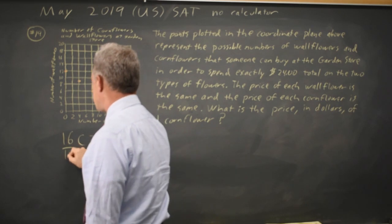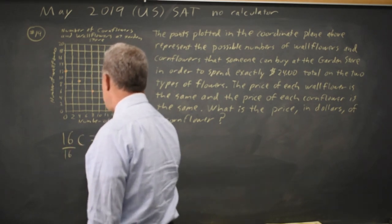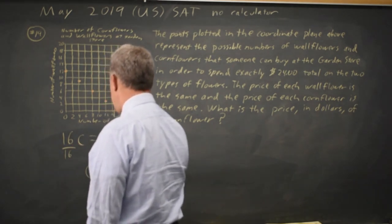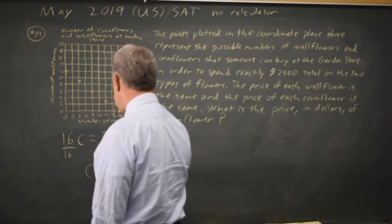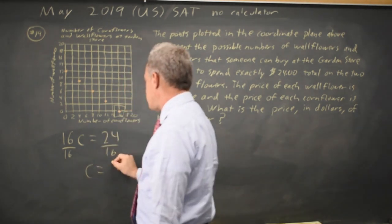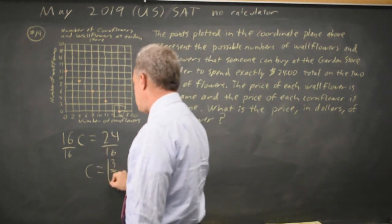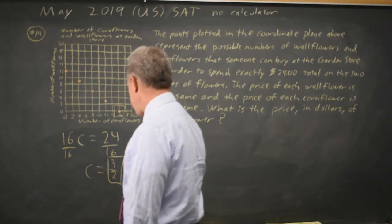Divide both sides by 16, and you get C by itself: 24 over 16, which simplifies to 3 times 8 over 2 times 8, giving us 3 halves, or 1.5.